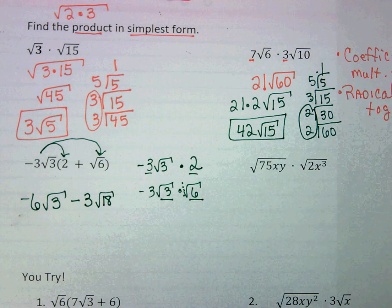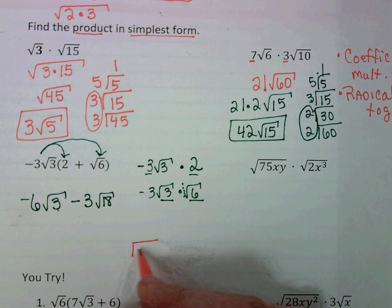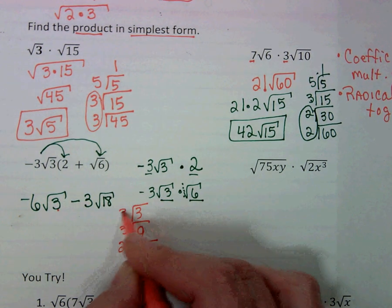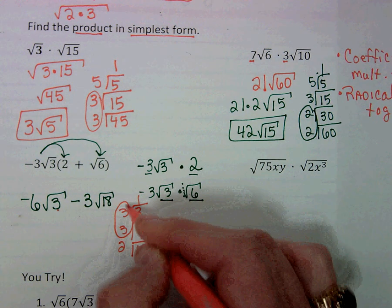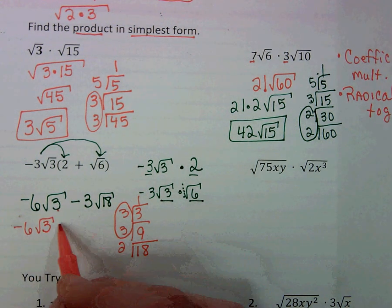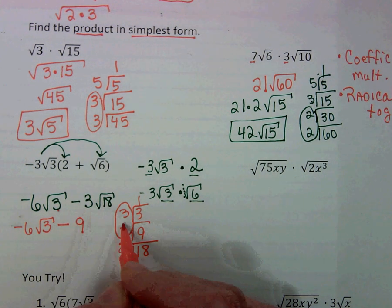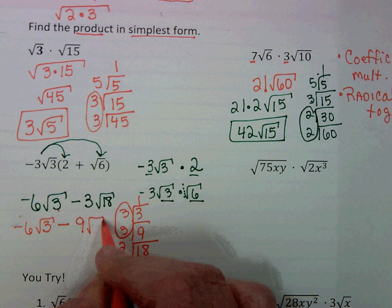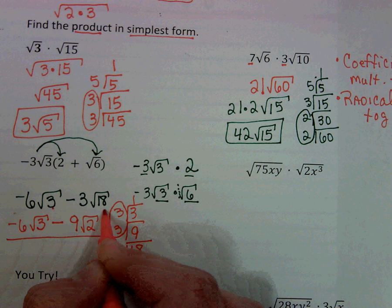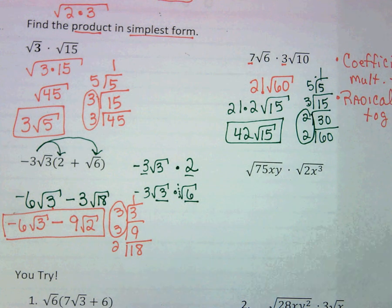We need to check to see if it can be simplified. The square root of 3 definitely cannot, but the square root of 18 can. I have a pair of 3's that comes out. So now it's -6√3 minus 9, because I'm multiplying it, the square root of 2. Those are not like terms, so we can't go any further. There is our simplified expression.